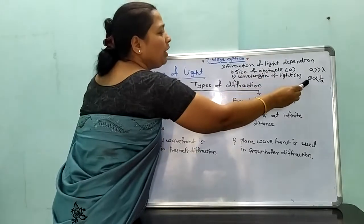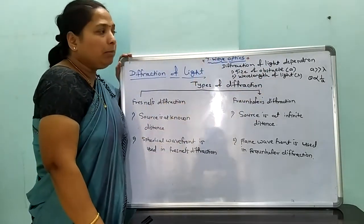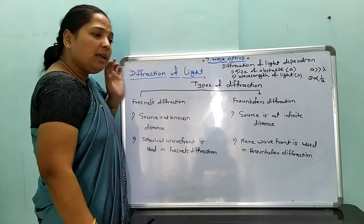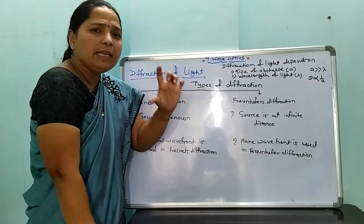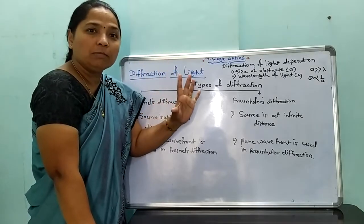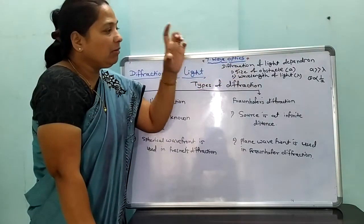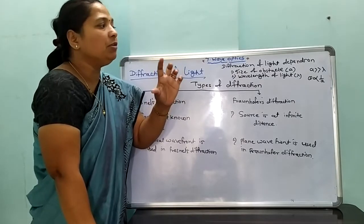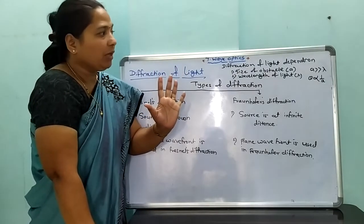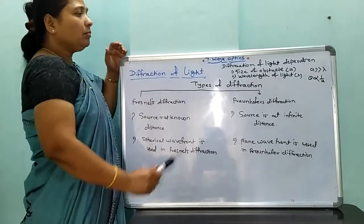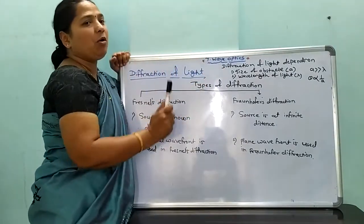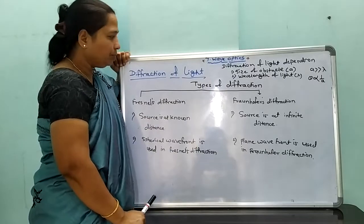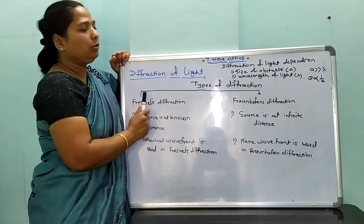The angle of bending is denoted by theta. The bending of light is inversely proportional to the size of the object. When the obstacle is very small, bending is more. When the slit is very small, light bends over a very large region. Therefore, diffraction depends on size of obstacle and wavelength of light.